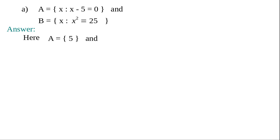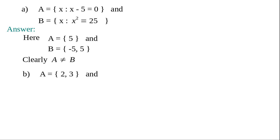For B, x² = 25 means x = 5 or x = −5, so B = {5, −5} containing two elements. Are the sets equal? No, A ≠ B because A contains one element and B contains two. Are they equivalent? No, because the number of elements is also not equal — n(A) = 1, n(B) = 2.